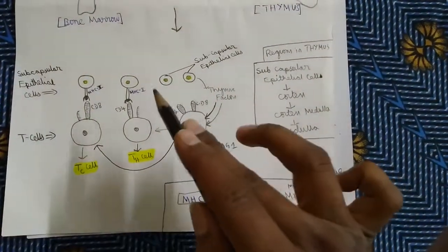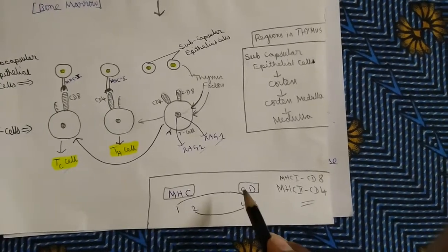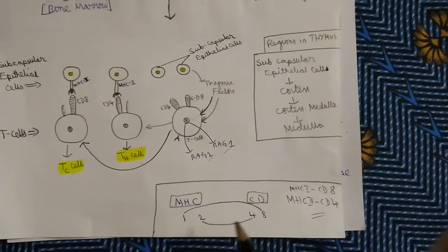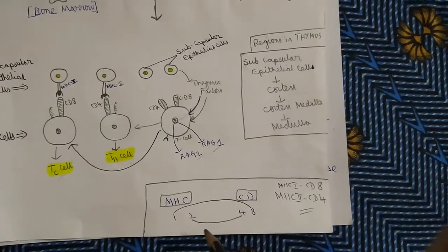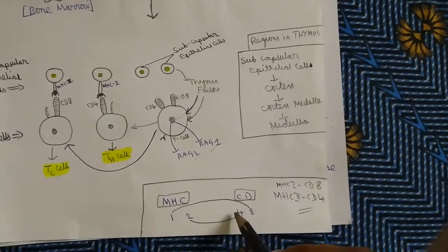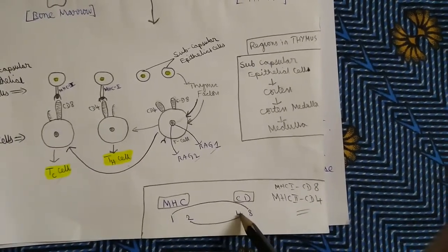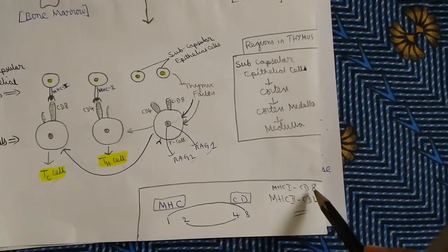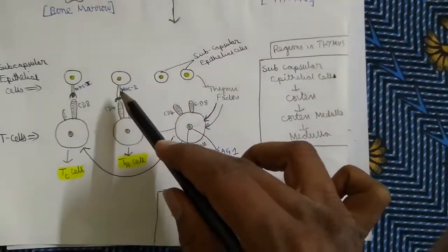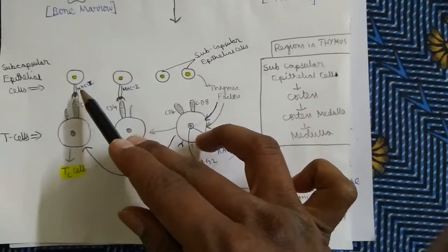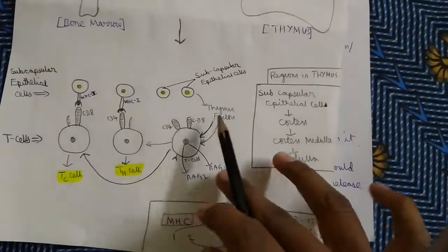You may get confused about which MHC produces which type of cell. Here we have MHC-1 and MHC-2, and CD4 and CD8. To remember: join the first number with the last number and the middle two numbers. MHC-1 is related to CD8, and MHC-2 is related to CD4. So if CD4 reacts with MHC-2, it becomes TH. If MHC-1 reacts with CD8, it becomes TC. In this way, the T-cell gets converted into either TH or TC.